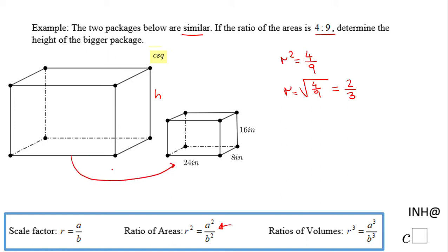So how can I find H here? It's exactly what I said: that H times 2 thirds, the scale factor, will be 16. And I have an equation that I need to solve.